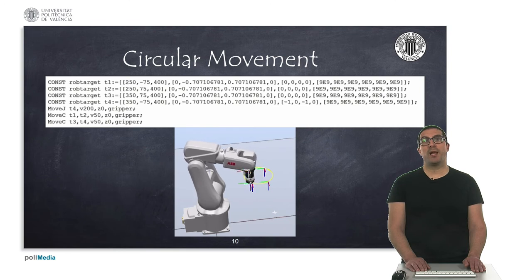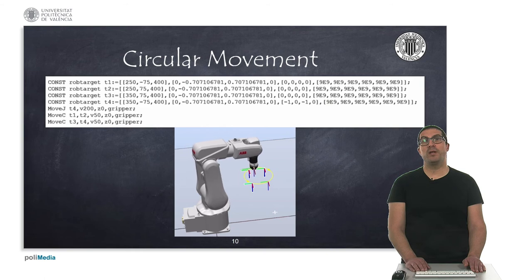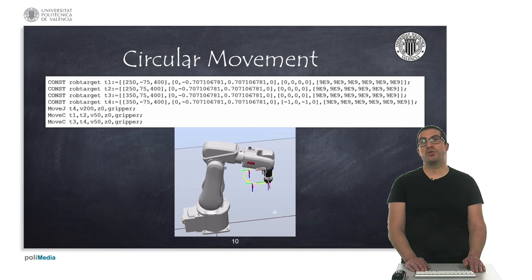Here we see a code example that allows you to do a full circle. The first instruction performs a linear movement to position T4, then performs a circular movement to position T2 passing through T1, and then returns to position T4 passing through T3 to complete the circle.